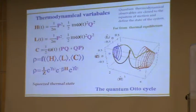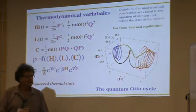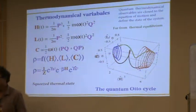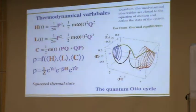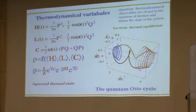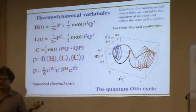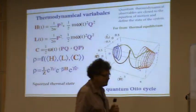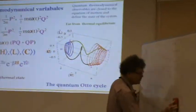We want the minimum number of variables to describe the state of the system. For the harmonic oscillator, I can get away with three variables. The Hamiltonian H is P-squared over two m plus m omega-squared Q-squared over two — it's time dependent. I also need the Lagrangian L, which is kinetic energy minus potential energy — the same but with a minus sign instead of plus.